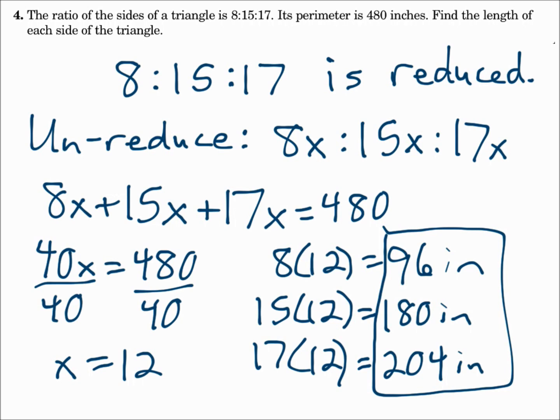So you had to un-reduce the ratio by multiplying by some number x and make your equation where those side lengths add up to the perimeter. Find x and then substitute back in.